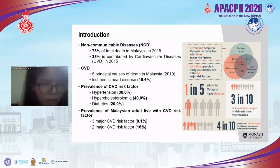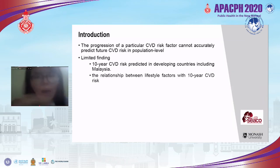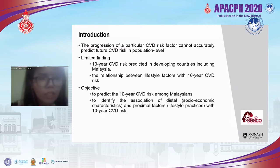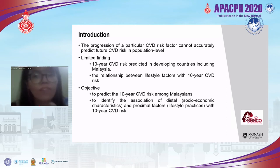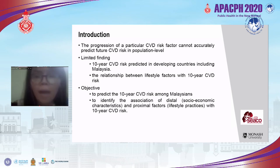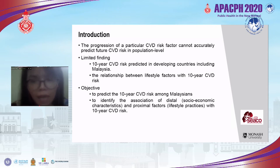8.1% of Malaysian adults lived with all three major CVD risk factors, while 60% lived with at least two. Since an individual may have one or more CVD risk factors, the progression of a particular risk factor cannot accurately predict future CVD risk at the population level. Studies on 10-year CVD risk prediction and lifestyle factors with CVD risk in developing countries including Malaysia are still limited. Therefore, this study aims to predict the 10-year CVD risk among Malaysians, and to identify associations of socioeconomic characteristics and lifestyle practices — including eating outside frequency and physical activity — with 10-year CVD risk.